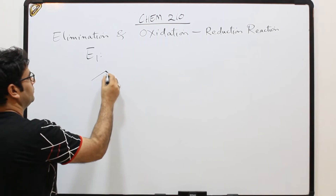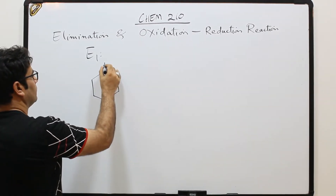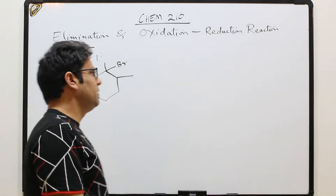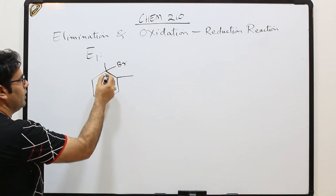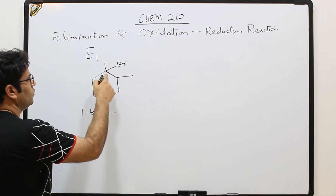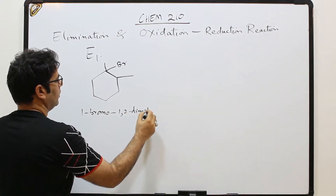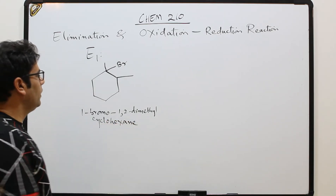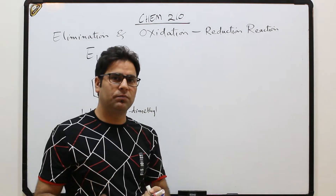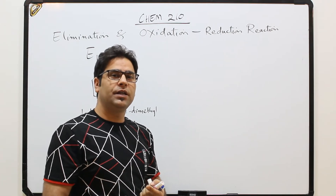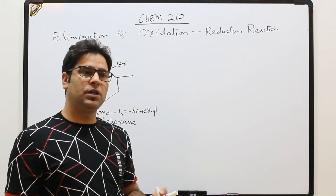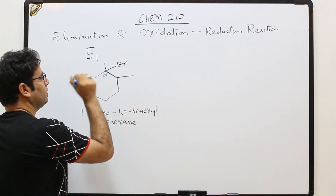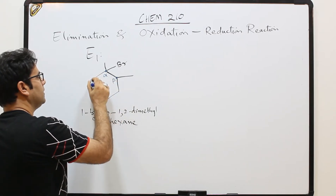Let me give you one more example. If we have this molecule, we have to give an E1 elimination reaction. The name of this compound is 1-bromo-1,2-dimethylcyclohexane. In E1 elimination there are two steps: number one is formation of a tertiary carbocation, and the second step is abstraction of hydrogen from the beta carbon. The carbon where the halide is attached is the alpha carbon, so the adjacent carbons are the beta carbons.